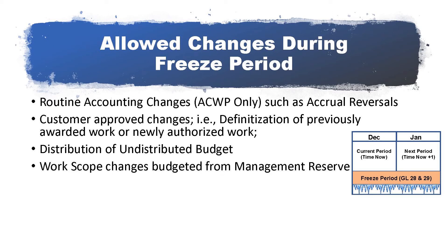Like UB, Management Reserve, or MR, is a holding account for budget. However, unlike UB, the MR budget has no scope assigned to it. When additional scope is transferred to control accounts that is not associated with a change in the contract's budget or authorized scope, the source of that budget is MR. While it is preferred that a change control program identifies scope and budget changes outside the freeze period, it is permissible to make freeze period changes if that work scope needs to begin in the freeze period.